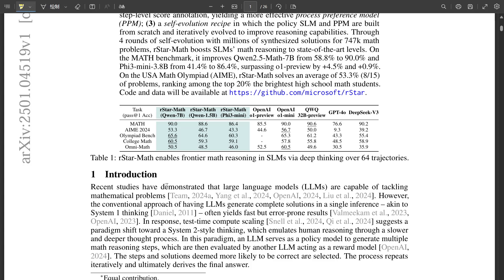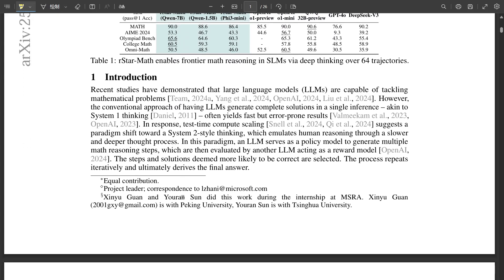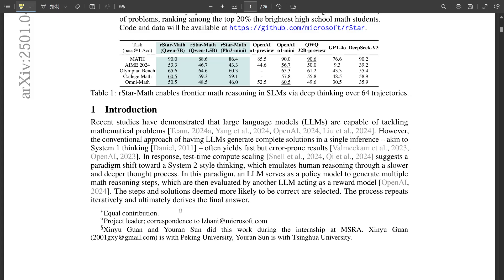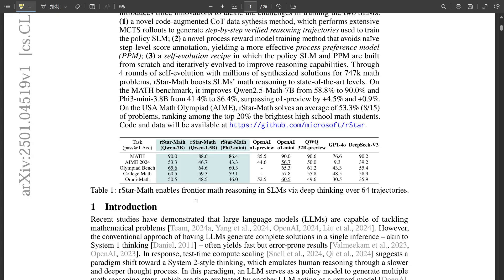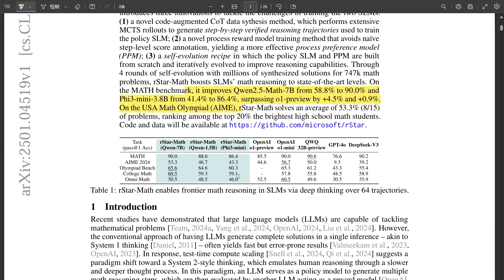So how does it do that? What's the secret sauce of R-Star Math? One key ingredient is a method called Monte Carlo Tree Search, or MCTS for short. Imagine the AI exploring this vast maze of possible solution paths, carefully testing each step along the way. That's essentially what MCTS does. It allows the AI to evaluate different strategies, learn from its successes and failures, and gradually refine its approach. So the AI is playing a game against the math problem, trying different moves and learning from the outcomes.